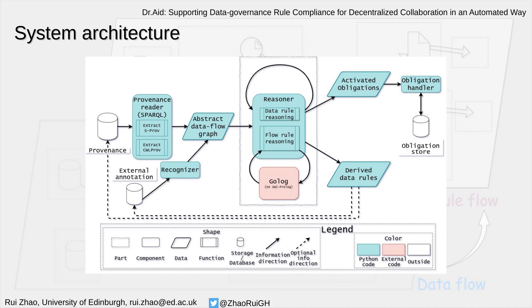We built a prototype system, and here is the system architecture. We use provenance as the lingua franca for different underlying systems, and extract the data flow graph from the provenance. We support two different provenance schemas at the moment: one is S-PROV, and the other is CWR-OV. We choose them because they correspond to the two major workflow execution system types: file-oriented and data streaming. We annotate the provenance information with extra annotations, which contain the data rules and the flow rules, because they do not exist in the provenance at the moment. Then we call the reasoner, which is built using both Python and Prolog. The Prolog part performs reasoning using a situation calculus formalization of the rule language through Golog.